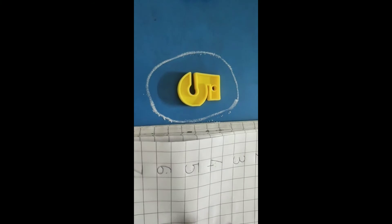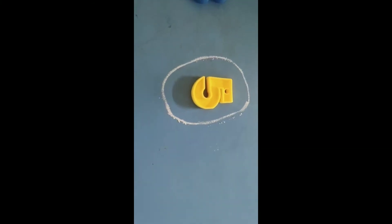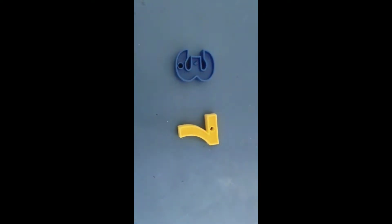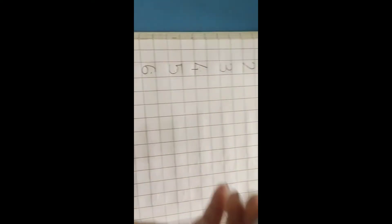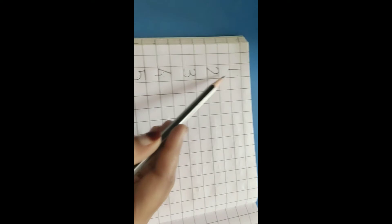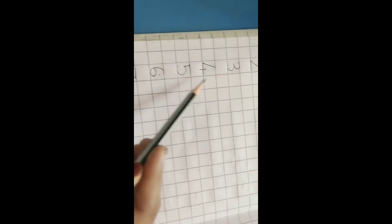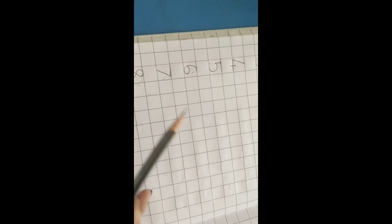I will show you one more example. The numbers are 3 and 7. Let us go through the notebook and count: 1, 2, 3, 4, 5, 6 and 7.